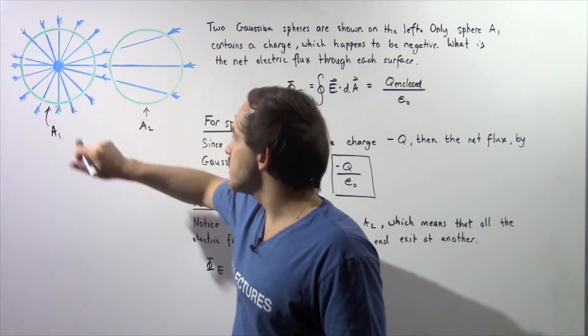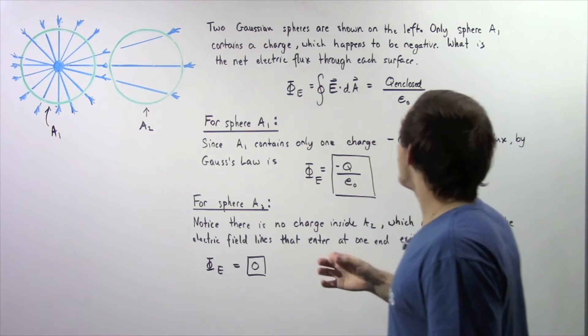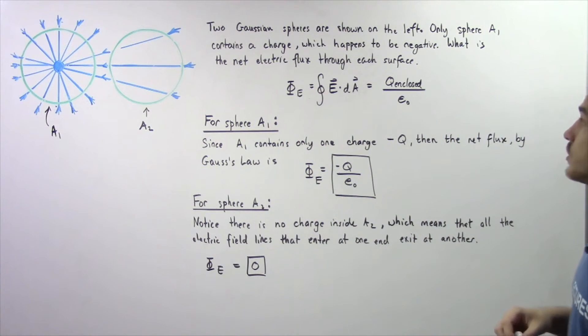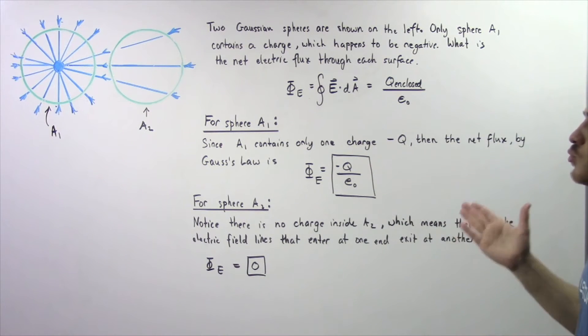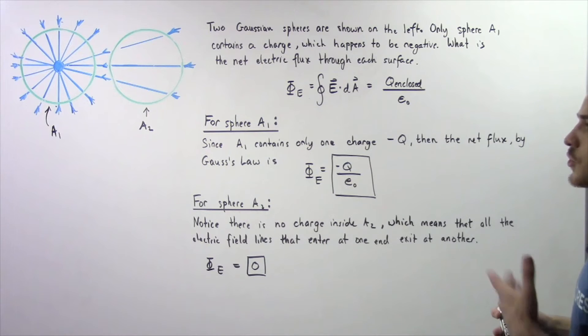Now, let's call this sphere A1 and this sphere A2. So, we want to ask the following question: What is the net electric flux through each one of these surfaces, through surface A1 and surface A2?